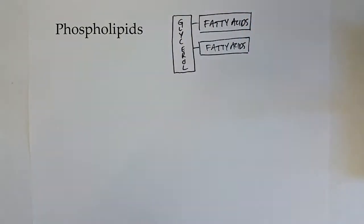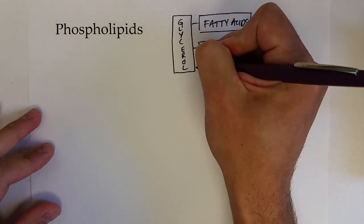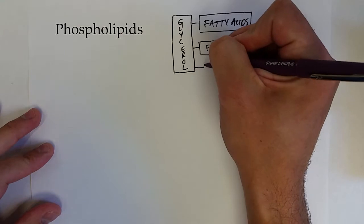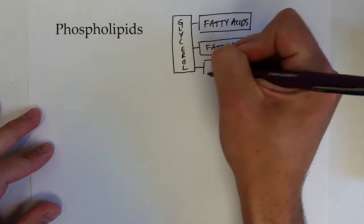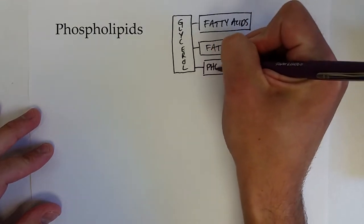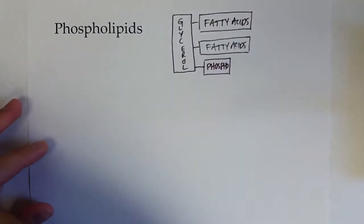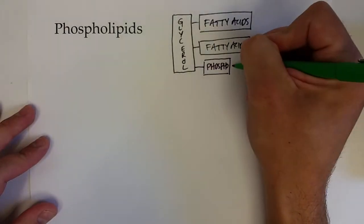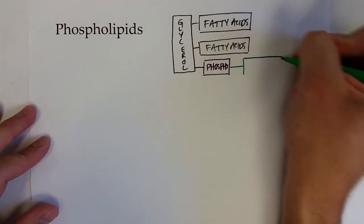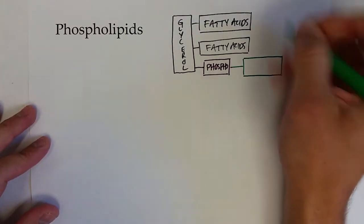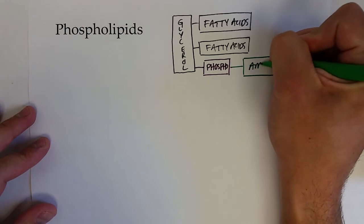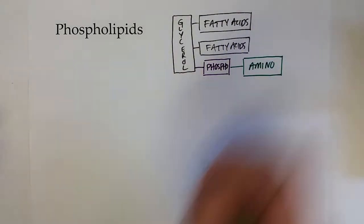So far this looks exactly like a triacylglycerol. The big difference is instead of the third fatty acid, the glycerol is connected to a phosphogroup that is in turn usually connected to an amine group that started out as an amine alcohol. So an amino group here.